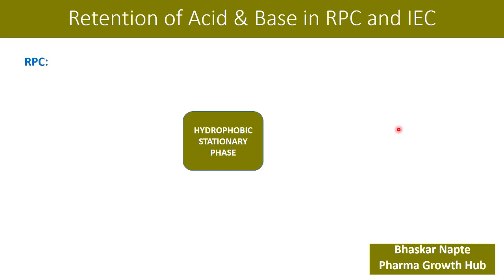Reverse phase chromatography has a hydrophobic stationary phase and a hydrophilic mobile phase. You can have columns like C8 or C18 — these columns are hydrophobic in nature. The rule called 'like attracts like' applies here: the hydrophobic stationary phase attracts hydrophobic compounds, and as a result the hydrophobic compound gets retained on the hydrophobic stationary phase for a longer time.